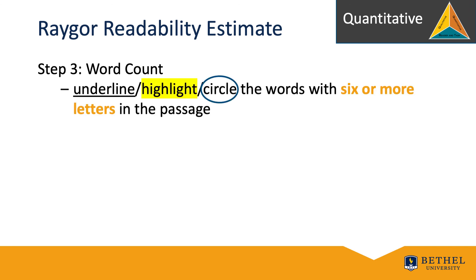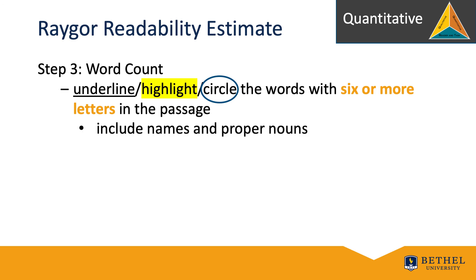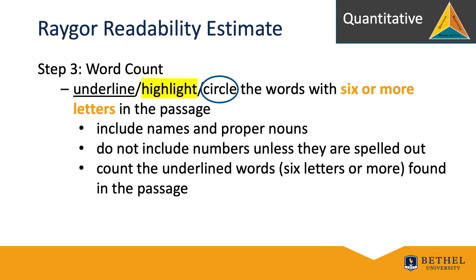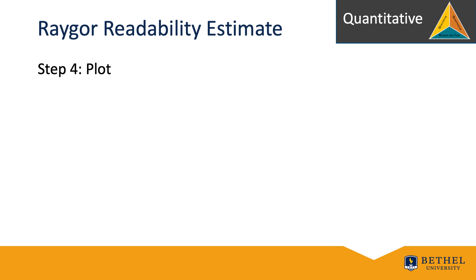Now let's address word count. Underline, highlight, or circle the words with 6 or more letters in the passage. From time to time, there can be trouble differentiating 5 letters in a word versus 6 letters in a word, so use caution — words like 'moves' or 'power' are 5 letters, but 'powered' would qualify. Include names and proper nouns. Do not include numbers unless they are spelled out. Count the total number of underlined words with 6 letters or more found in the passage.